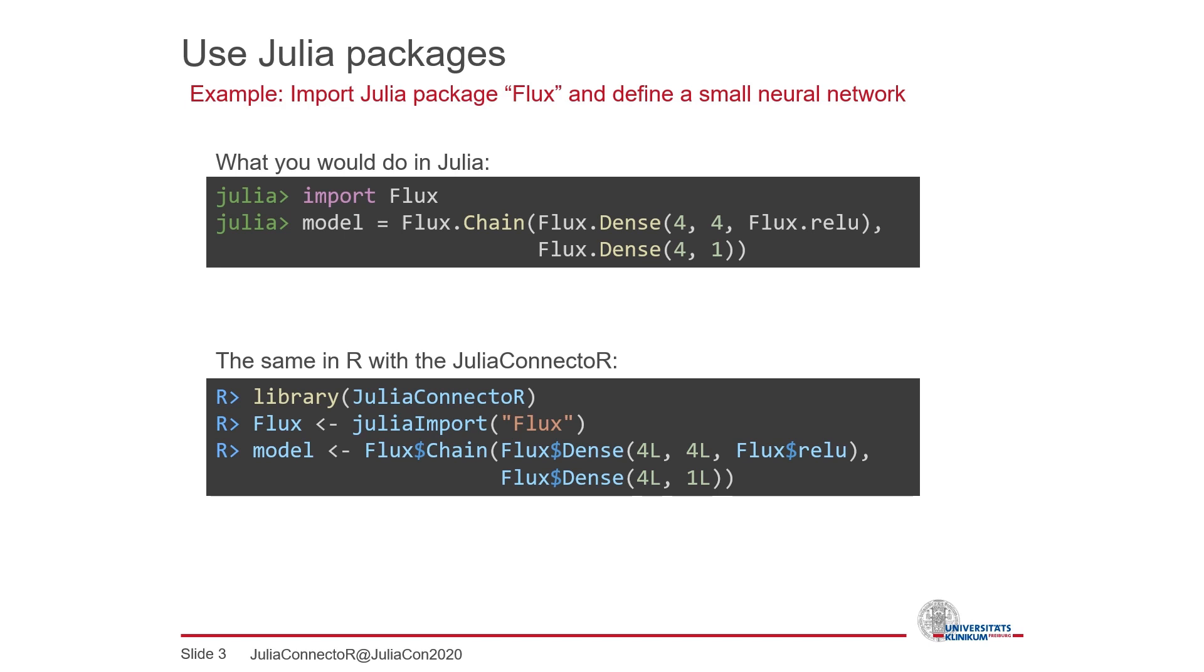Chaining function calls is possible because object references can be transferred between R and Julia. In the same way the return value of a function call, here our neural network, can be assigned to an R variable. As you can see this allows a quite tight integration on the syntax level.